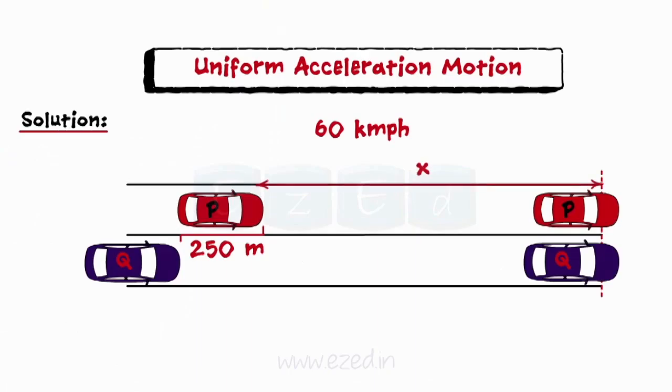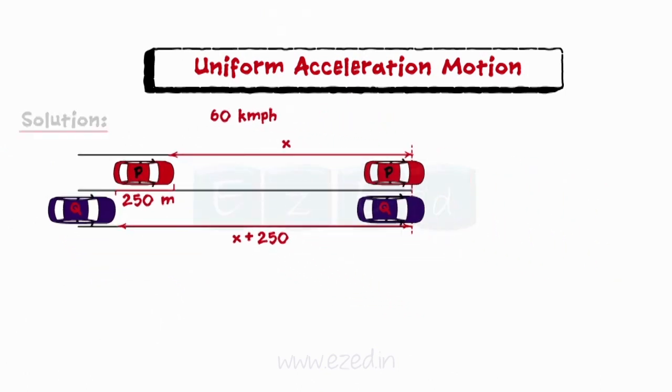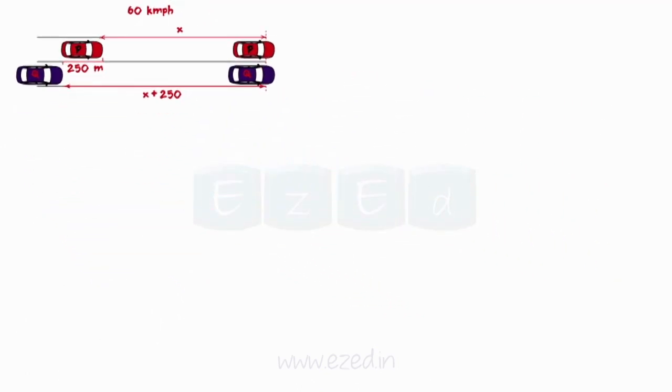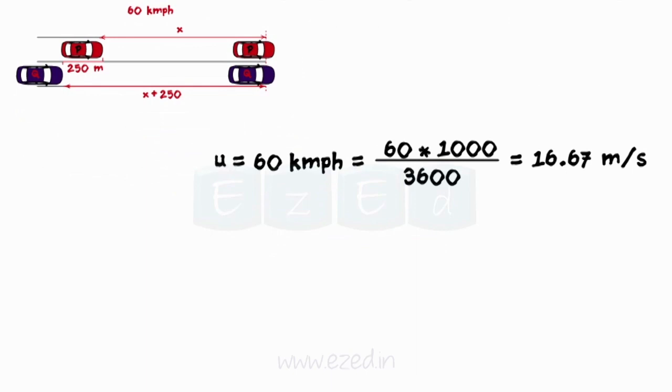Let car P travel x meters, and so car Q travels x plus 250 meters as car Q will overtake car P. Initial velocity of car P and Q is 60 km per hour. On evaluating, we get 16.67 meters per second.